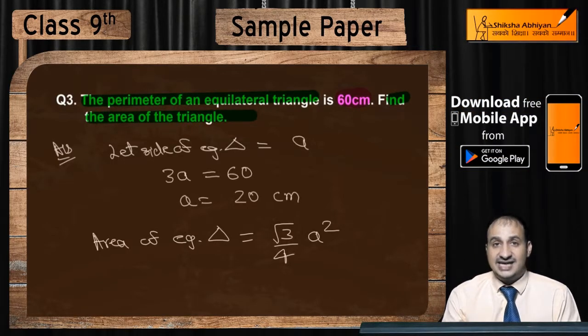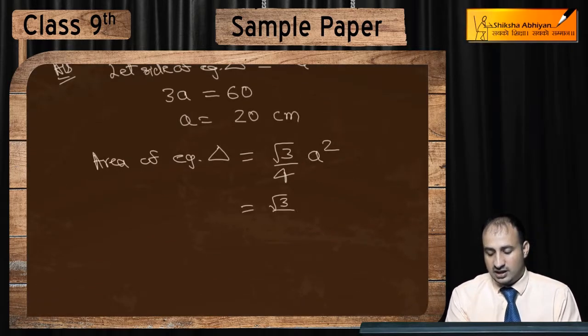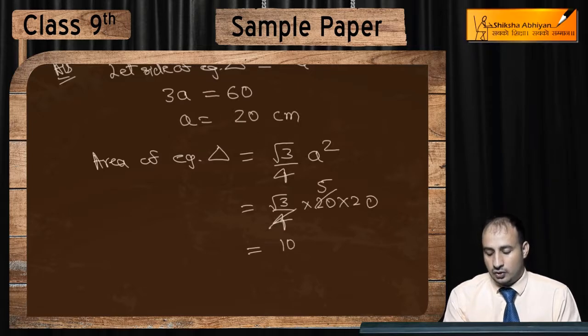Now substitute the value here. This will be root 3 upon 4 into 20 into 20. And here if we divide 20 by 4, we get 5. 5 into 20 is 100.